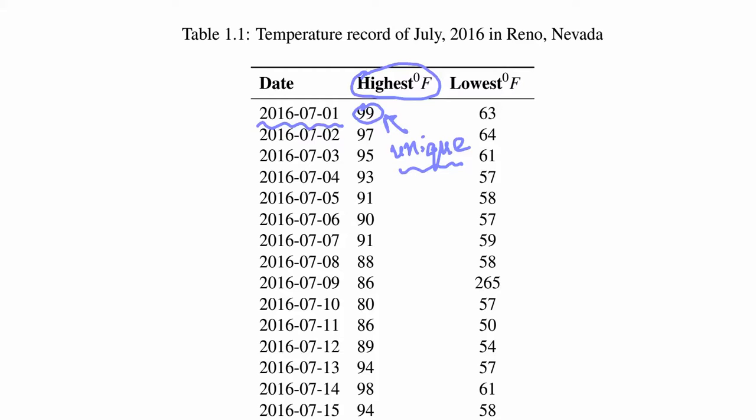Of course, there is a possibility that there is another date where the temperature might be also 99 Fahrenheit. But that's fine. The thing is that for a given date, you want to have the unique highest temperature corresponding to that date.